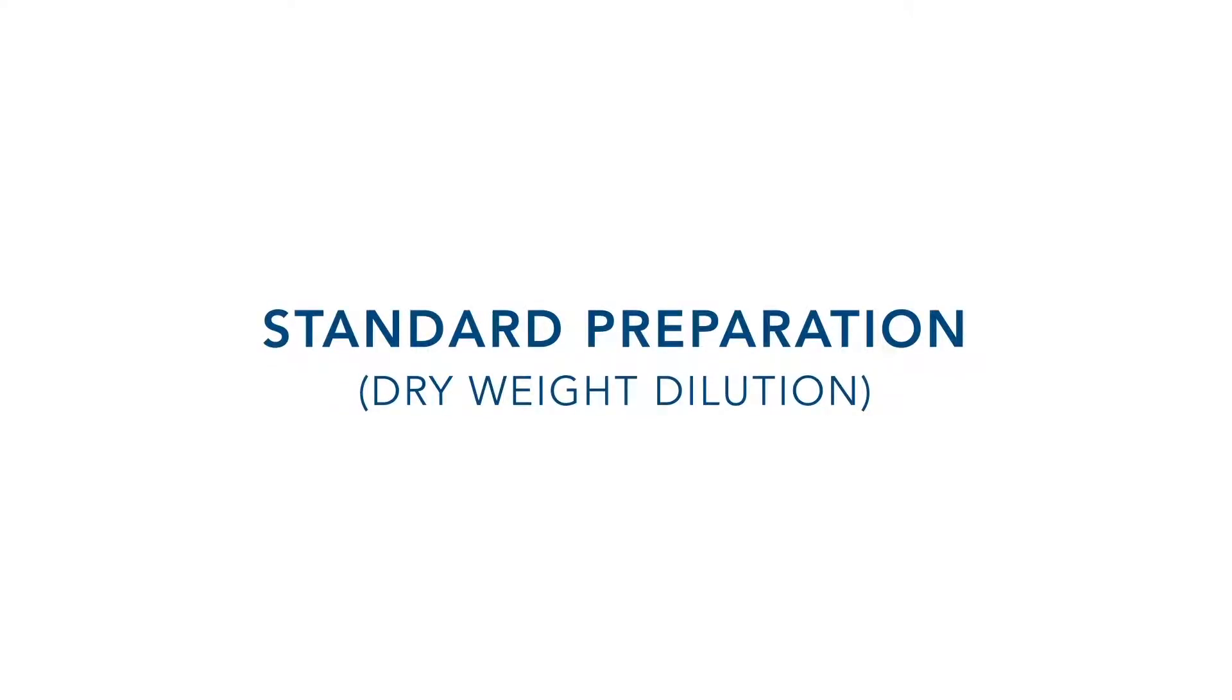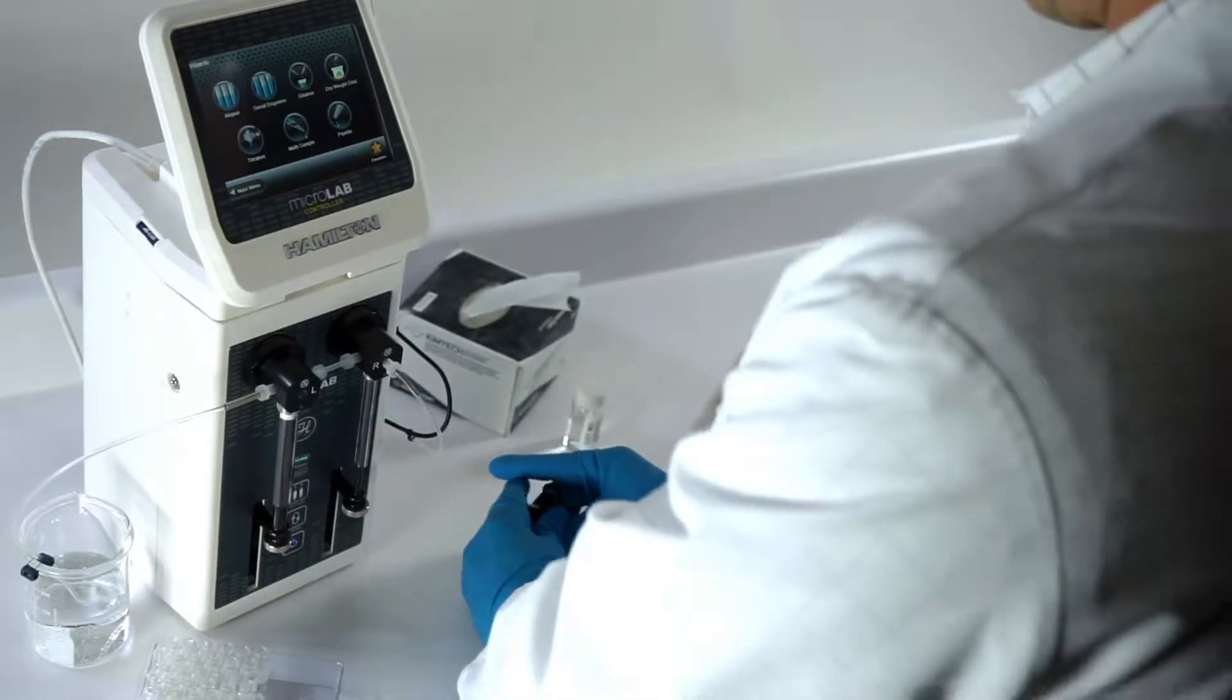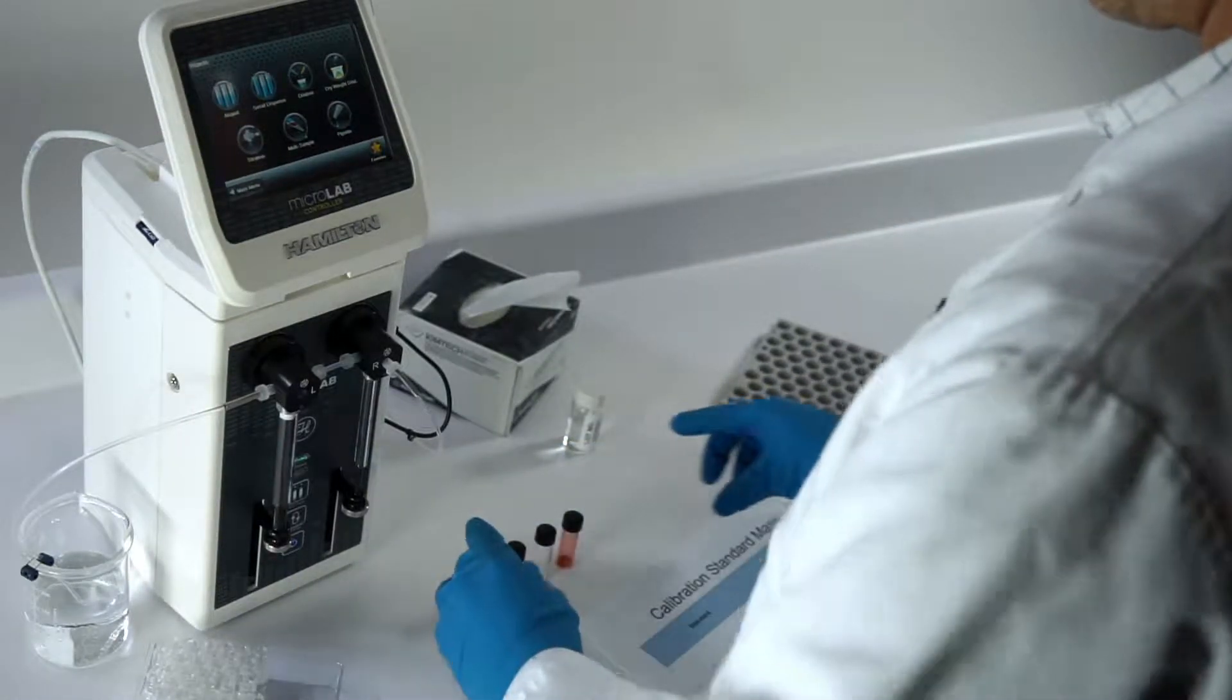A Hamilton Microlab 600 can be used to prepare standard solutions from dry powder without the need for volumetric glassware. To begin this process,